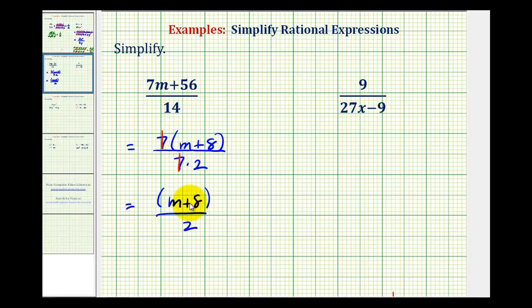And because we only have one factor of m plus eight in the numerator, if we wanted to, we could leave off the parentheses. We could write this as m plus eight divided by two. In either form, we cannot simplify the eight and the two because again, we cannot simplify across this addition. So either of these two forms is correct.